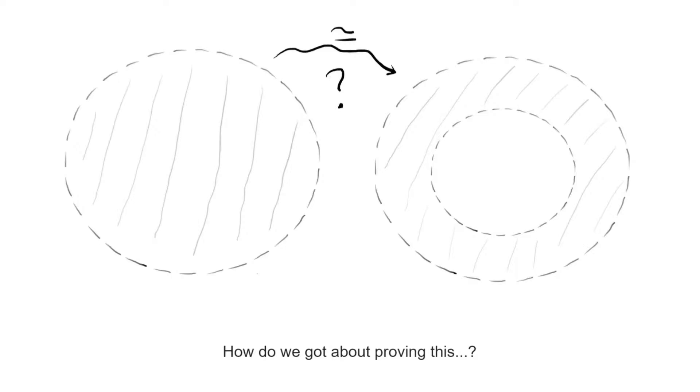In previous courses on topology, you've probably encountered already some techniques to study this problem. What we normally do is we pick a property that is invariant under homeomorphisms, and we check whether each of the two spaces satisfies it or not.